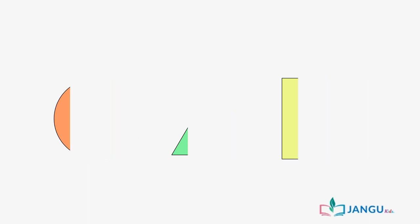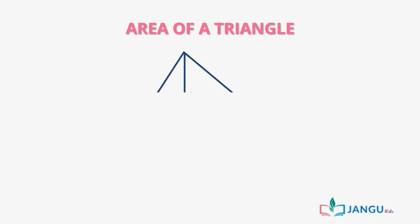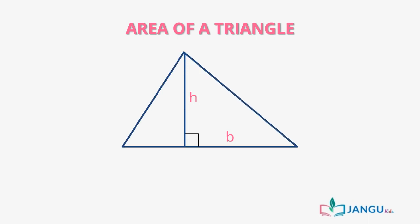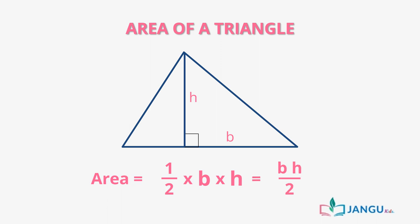For example, to calculate the area of a triangle, you already know its height and length. It is simply half of B times H, where H is the perpendicular height, also known as altitude, and B is the length of the base.